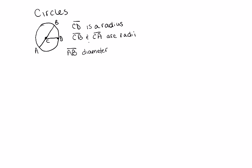The diameter AB is made up of two radii, segments CB and CA. So the diameter is twice the radius.